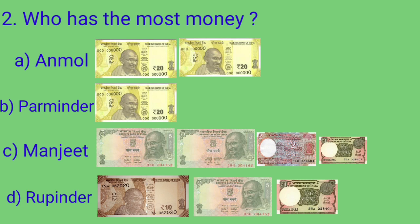Anmol has 2 notes of Rs. 20. 20 and 20 is equal to Rs. 40, so Anmol has Rs. 40 with him. Paraminder has 1 note of Rs. 20, so he has Rs. 20 with him.